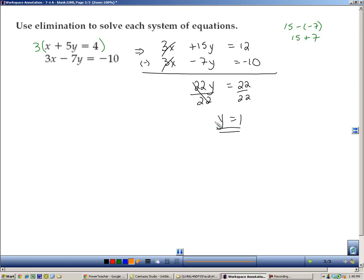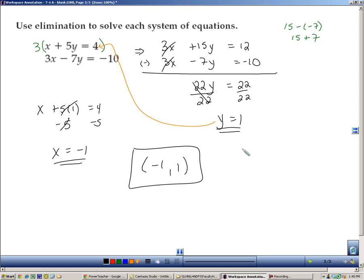Take that and plug it back. I like the first one, the original equation. So x plus 5 times 1 equals 4, and that's really a 5, so I will subtract it to create a 0, and it looks like x equals negative 1. Remember, alphabetical order, not the order in which you find them, and there's your solution.